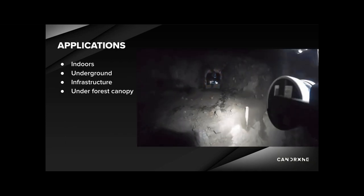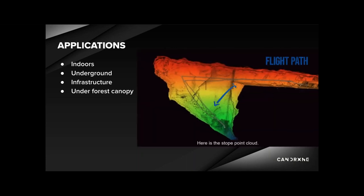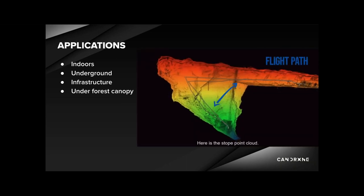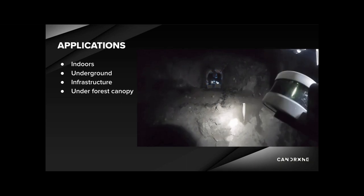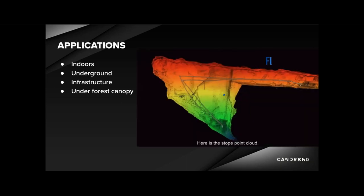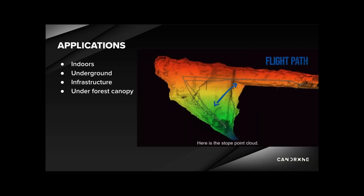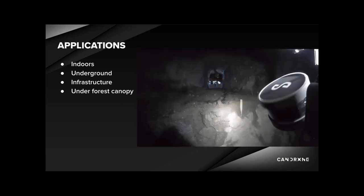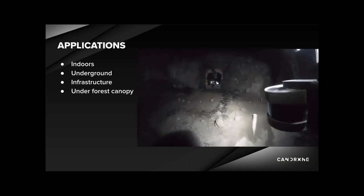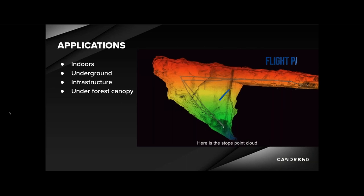Where the HoverMap really shines is in GPS-denied environments — tunnels, mines, factories, the underside of bridges, and many other hard-to-map environments. It's currently being used in industries such as mining, urban planning, oil and gas, industrial infrastructure management, construction and AEC, and forestry. Mining has traditionally been a very difficult industry to map, but we've lost count of the number of times someone from mining has called the HoverMap a game-changer. To explain more about how this is achieved using SLAM, I'll hand over to Camille.